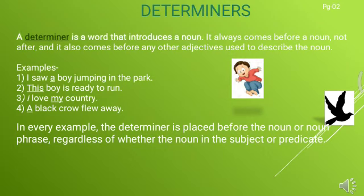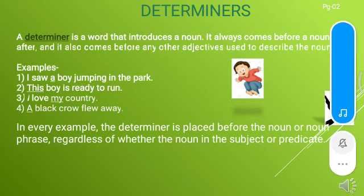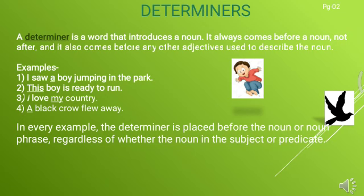Determiners. A determiner is a word that introduces a noun. It always comes before a noun, not after. And it also comes before any other adjectives used to describe the noun. For example, I saw a boy jumping in the park — here 'a' is the determiner and 'boy' is the noun.